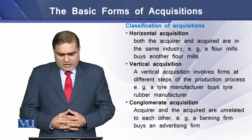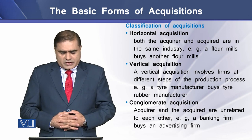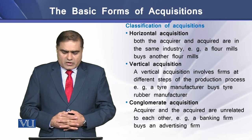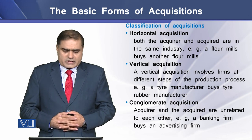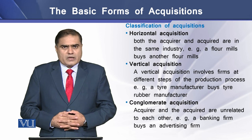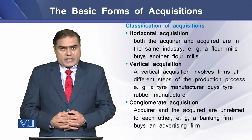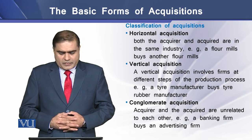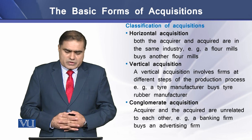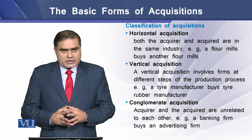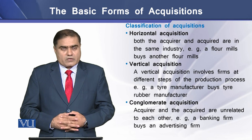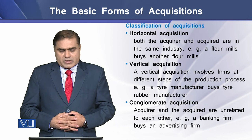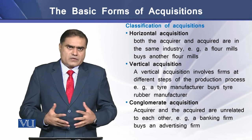So both firms are in the same industry. The second form is vertical acquisition, which involves firms at different steps of the production process. For example, a tire manufacturer buys a tire rubber manufacturer. The third is conglomerate acquisition, which refers to the situation where the acquirer and the acquired firm are unrelated to each other — for example, a banking firm buys an advertising firm.